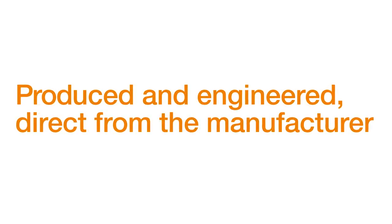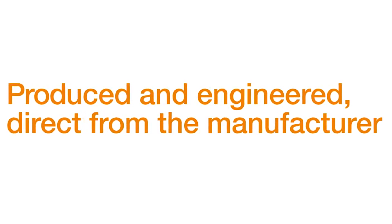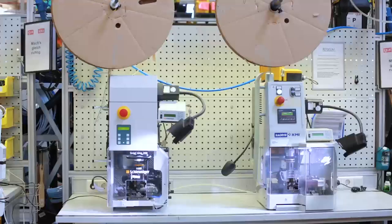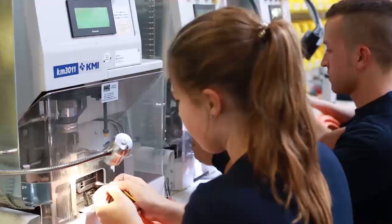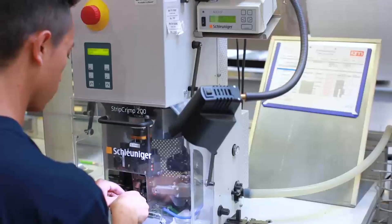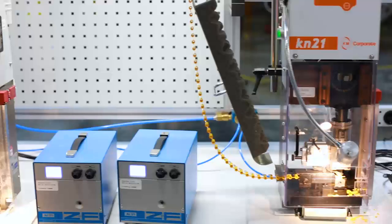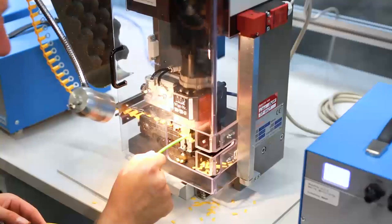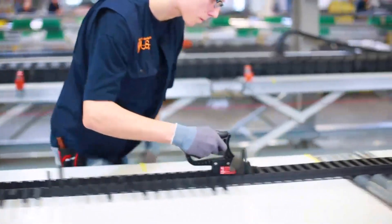Produced and engineered, direct from the manufacturer. At the Cologne site, one of 12 Egos harnessing factories worldwide, we manufacture 10,000 ready-to-connect cables and more than 1,600 ReadyChain systems per week. Highly efficient, from batch size 1.